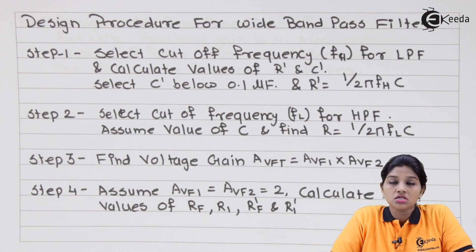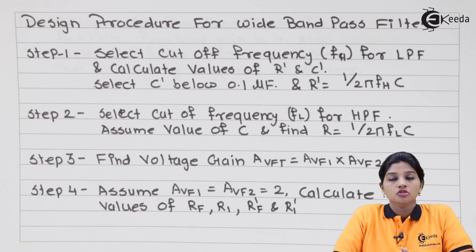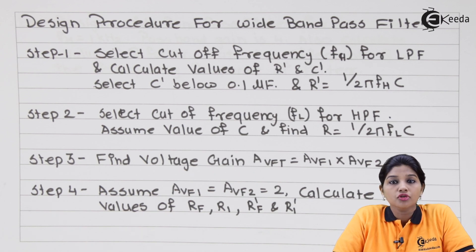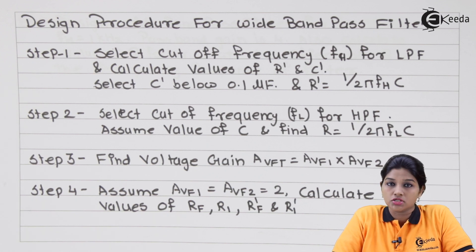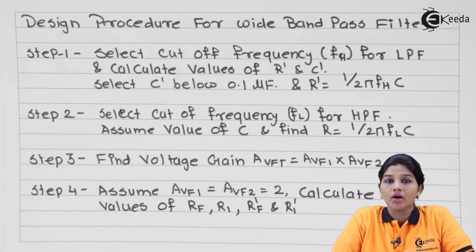As the value of Q increases, the bandwidth is reduced, because Q equals fc divided by bandwidth, where fc is the center frequency and bandwidth is the difference between higher frequency and lower frequency. So as bandwidth and Q factor are inversely proportional, as Q increases, bandwidth is reduced and we get a sharper frequency response.